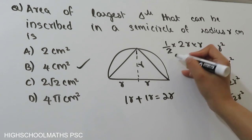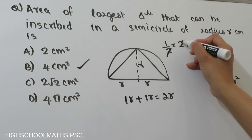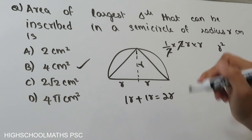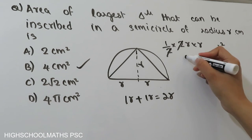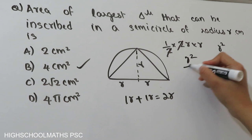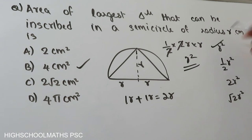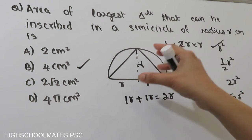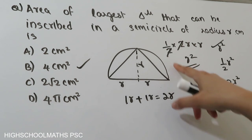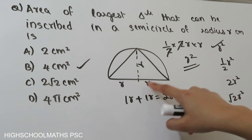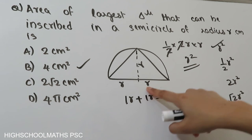R will cancel, giving R into R. The answer is R squared. So the area of the largest triangle that can be inscribed in a semicircle of radius R is R squared.